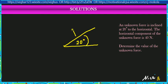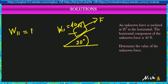We have a force acting on an object. The unknown force is F, and the horizontal component is 40 Newton. We are looking for the unknown force F, so we'll make F the subject of the formula.